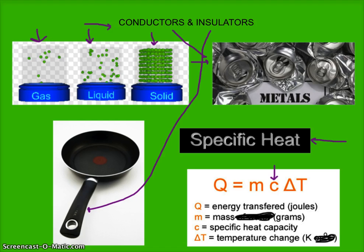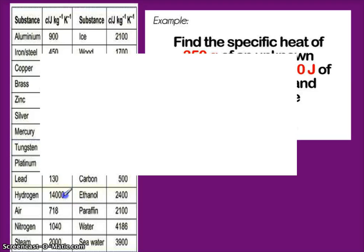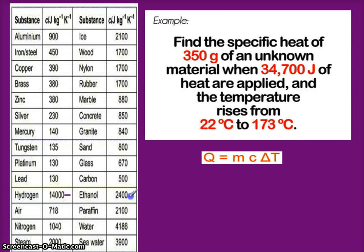I have a chart here of specific heats. The higher the number, the better the insulator. Some of these are in the thousands — hydrogen, ethanol, paraffin, water, seawater. Remember, the ones that are gases or liquids do not conduct heat very well. Wood is a solid but it's not a very good conductor — it's an insulator. But the ones with low specific heats are the good conductors.